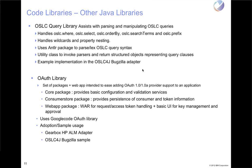The OAuth library has a core package providing OAuth configuration and validation services. There's a consumer store package to help with persisting consumer and token information — today it can use a Derby database or file system, and it's very extensible if you want to use some other persistence method. There's also a web application that handles request access and token handling, with a basic UI to manage keys and key approval. This is also used in the Bugzilla sample. The OAuth library uses the Google Code OAuth library, which just got approved by the Eclipse Foundation, so we should be able to package that one up shortly.